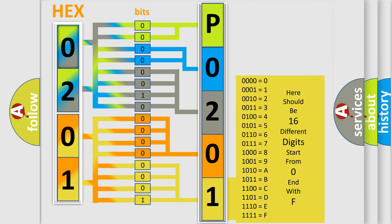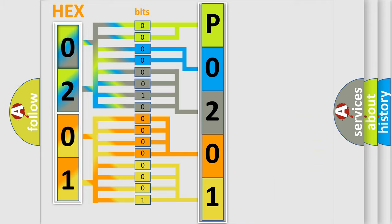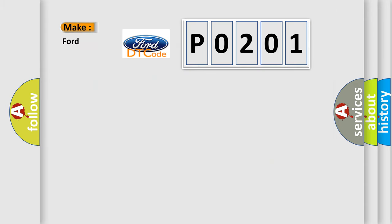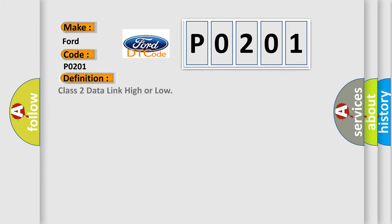We now know how the diagnostic tool translates the received information into a more comprehensible format. The number itself does not make sense to us if we cannot assign information about what it actually expresses. So, what does the diagnostic trouble code P0201 interpret specifically for Infiniti car manufacturers?